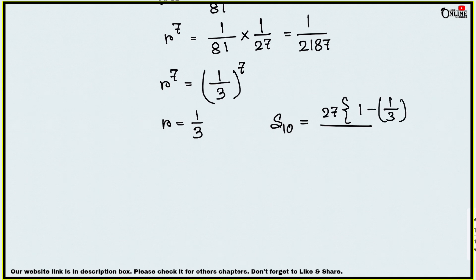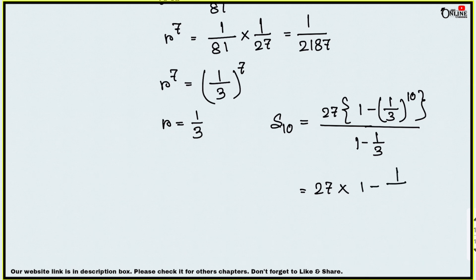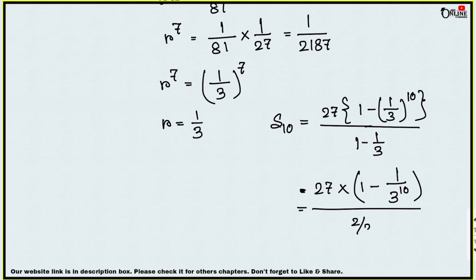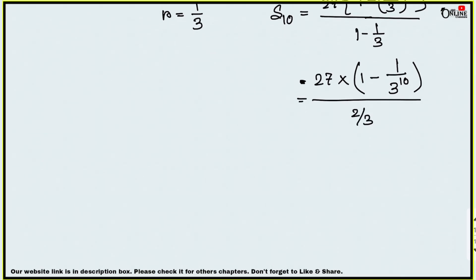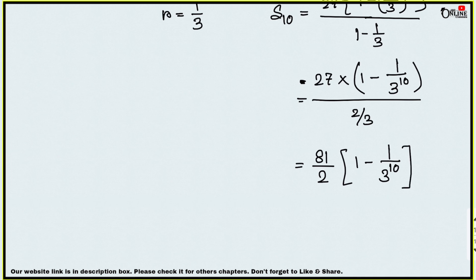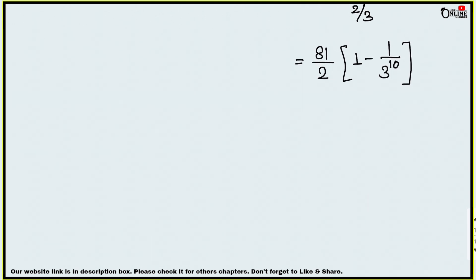For S10 with r < 1: S10 = 27 × (1 − (1/3)¹⁰) / (1 − 1/3) = 27 × (1 − (1/3)¹⁰) / (2/3) = (81/2) × (1 − (1/3)¹⁰). That expression is your final answer.